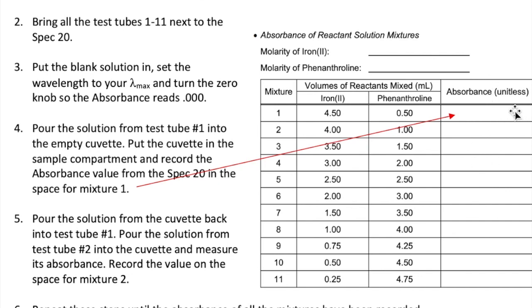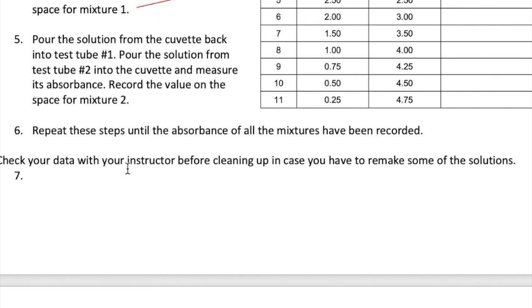This is because all the measurements are done at that same wavelength, which is your lambda max. Repeat the absorbance measurements with all the solutions from 1 through 11. Lastly, go to the reagent bottles and record the value of the molarities for each of the solutions that you use in this space right here. Check your data with your instructor first before you clean up to make sure that it's reasonable. Your instructor may ask you to repeat or redo some of the measurements if the value is incorrect.